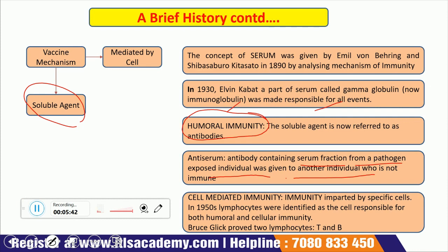Cell-mediated immunity is another branch that plays a role in the vaccine mechanism — it is mediated by cells, specifically B cells and T cells, now known as B lymphocytes and T lymphocytes. In a key experiment by Merrill Chase in 1940, he succeeded in conferring immunity against tuberculosis by transferring white blood cells between guinea pigs, where all previous attempts had failed. In 1950, lymphocytes were identified as the cells responsible for both humoral and cellular immunity, and Bruce Glick proved there are two lymphocytes: T and B.